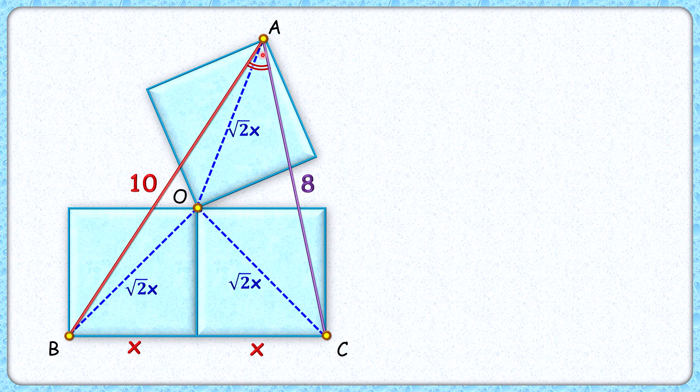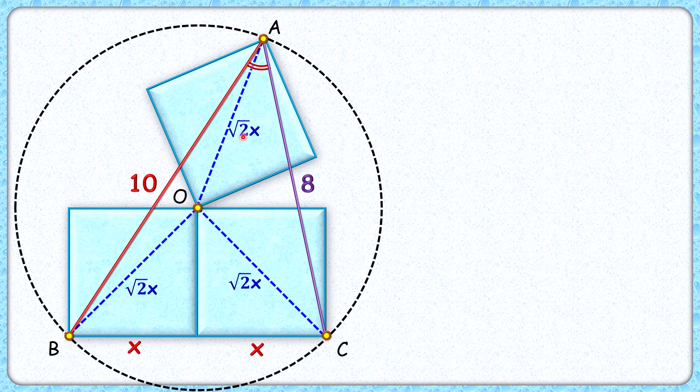Now if you look carefully, points A, B, C are equidistant from this center O, so O is the circumcenter of this triangle ABC. Or we can draw a circle with center O and radius √2x.